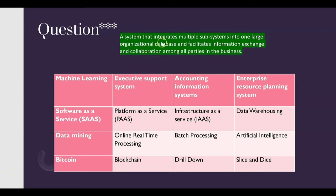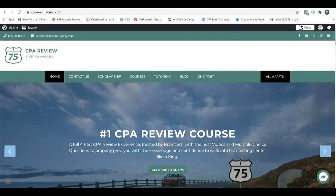Here's one more: 'A system that integrates multiple subsystems into one large organizational database and facilitates information exchange and collaboration among all parties in the business.' What does that describe? Is it batch processing or online real-time processing? No — it says a system that integrates multiple subsystems into one large organizational database and facilitates information exchange and collaboration among all parties in the business. Why don't you leave a comment on this YouTube video and let me know what you think the answer is, or go to cpaexamtutoring.com and hit the contact us button.